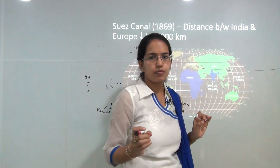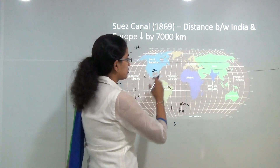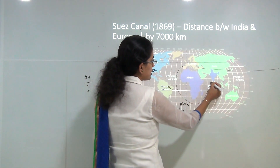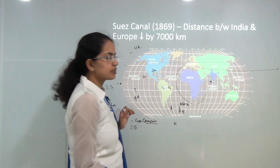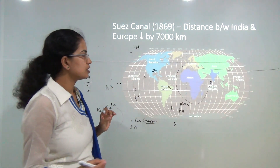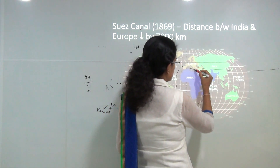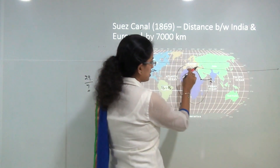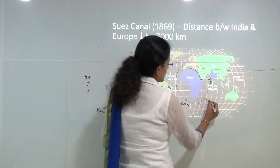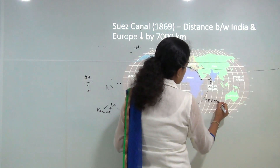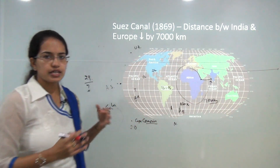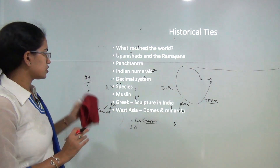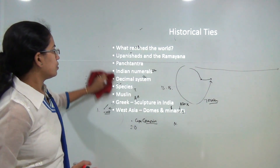India's location is strategically important. On a world map, travelling from Europe to India, the Suez Canal provided the shortest route, reducing the journey by nearly 7,000 kilometers. As a result, trade with India increased significantly over time.